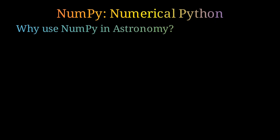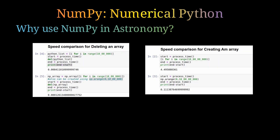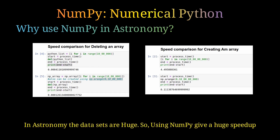Why do we use NumPy in astronomy? There are many reasons, but let me point out two. First, NumPy makes the code very fast. There are examples showing the speed difference between NumPy arrays and normal Python lists. In astronomy we use huge datasets, so this speed advantage is very significant.